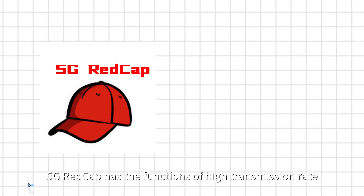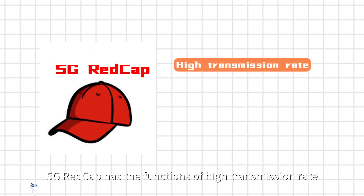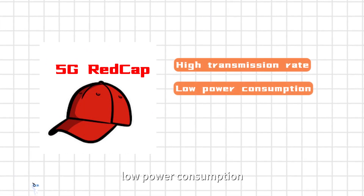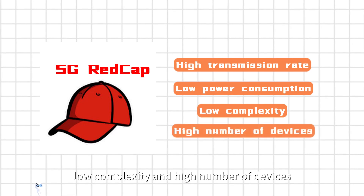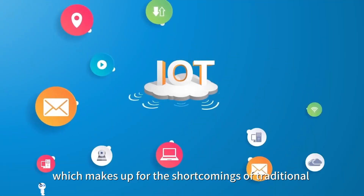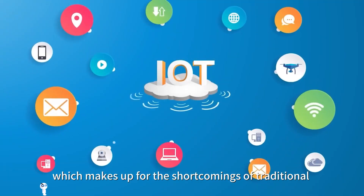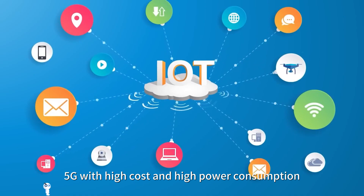5G REDCap has the functions of high transmission rate, low power consumption, low complexity, and high number of devices, which makes up for the shortcomings of traditional 5G with high cost and high power consumption.